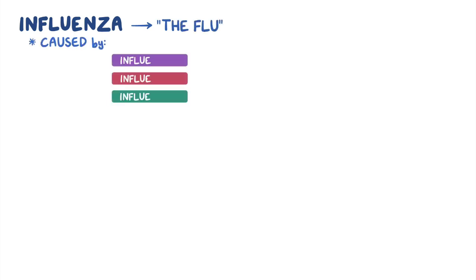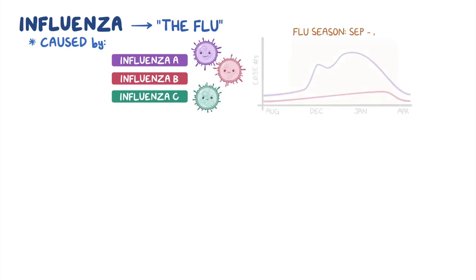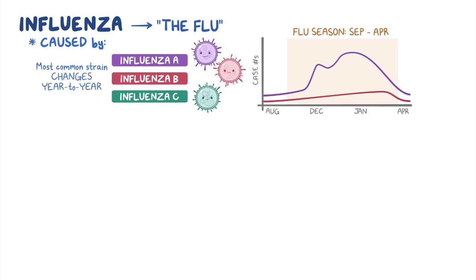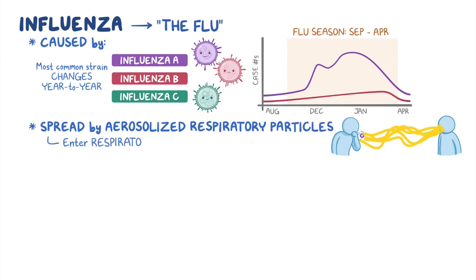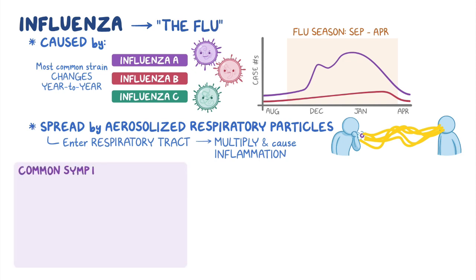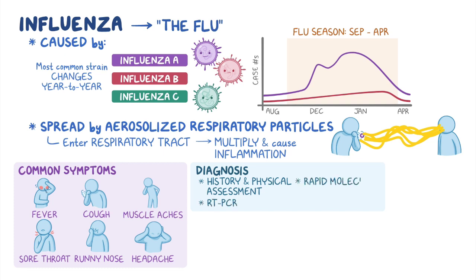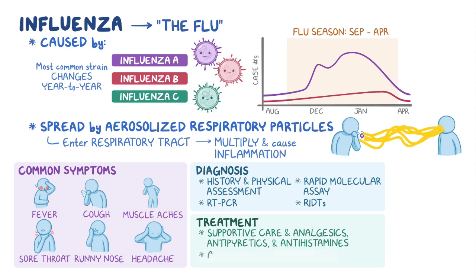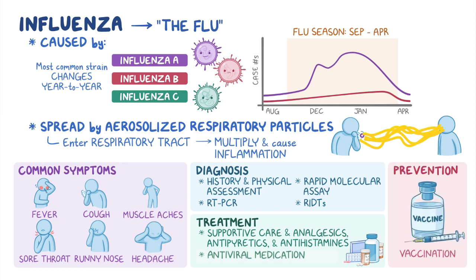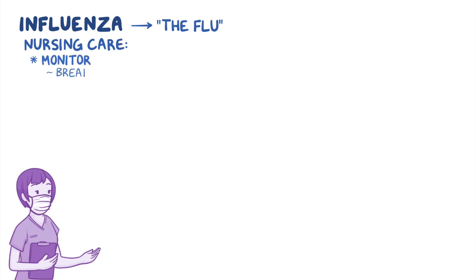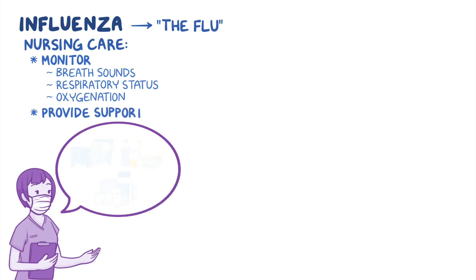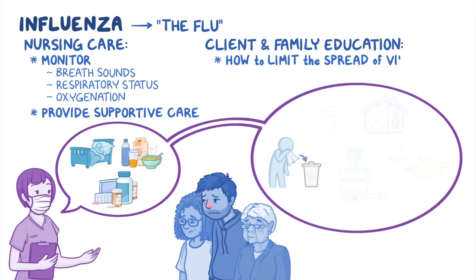As a quick recap: influenza, or the flu, is a highly contagious respiratory disease caused by influenza virus types A, B, or C. The flu season spans from September to April, and the virus strain changes from year to year. The virus is typically spread through aerosolized respiratory particles that enter the body through the respiratory tract where they multiply and cause inflammation. Common symptoms include fever, sore throat, cough, runny nose, muscle aches, and headaches. Influenza is typically diagnosed based on history and physical assessment; additional diagnostic tests include RT-PCR, rapid molecular assay, and RIDTs. Treatment involves supportive care and medications like analgesics, antipyretics, and antihistamines, as well as antiviral medications in certain cases, while prevention involves vaccination. Nursing care includes monitoring the client's breath sounds, respiratory status, and oxygenation while providing supportive care. Client and family education is focused on how to limit the spread of the virus and prevent future infections.